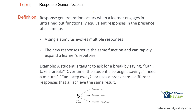Now let's look at response generalization, which in many ways is the opposite. A learner engages in untrained but functionally equivalent responses in the presence of a stimulus. Those responses really need to be functionally equivalent — random responses in the presence of a stimulus don't make sense if they don't serve a purpose. For example, you taught your learner to say 'hi' to a friend. Now they're also saying 'hello' and 'what's up.' They've generalized these responses across a single stimulus. In response generalization, a single stimulus evokes multiple responses.